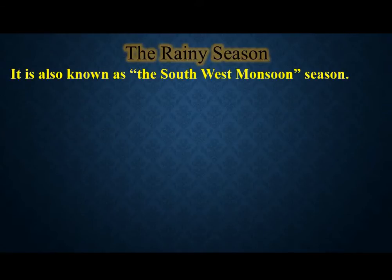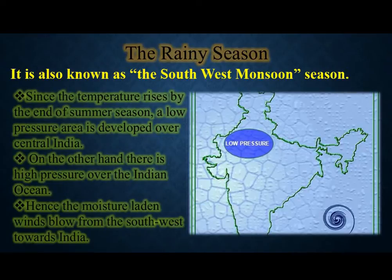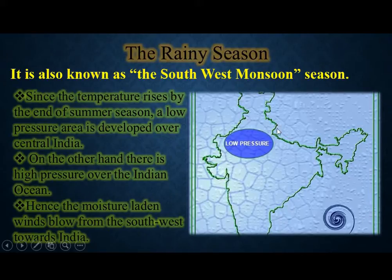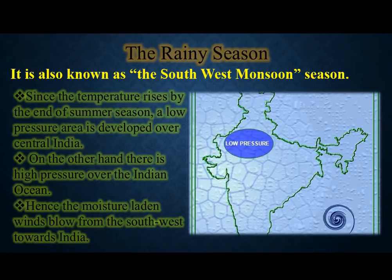You might be asking why we call it the southwest monsoon season. This season is called so because the temperature rises in summer, causing low pressure to develop over the central part of India. On the other hand, high pressure over the Indian Ocean is created. Because of this, the wind blows from the Indian Ocean to India — moisture-laden wind blows from the southwest towards India, which is why rain happens here.